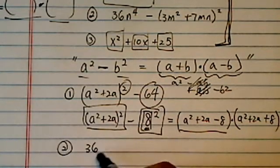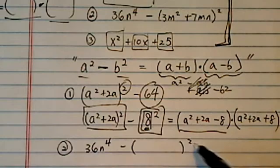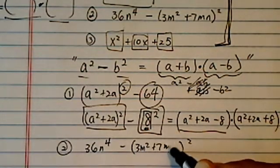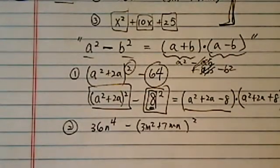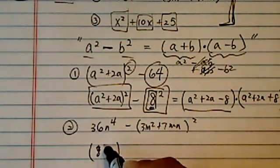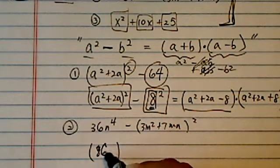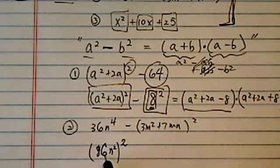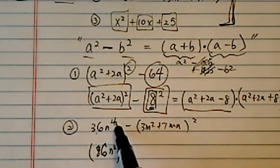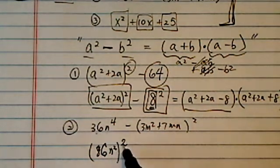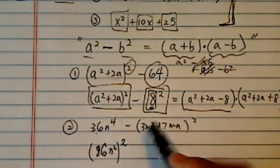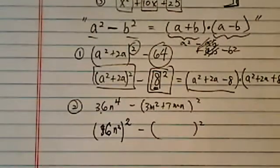Let's try number two. 36n to the fourth minus the big messy one to the square, 3m squared plus 7mn. If your teacher throws this one on the test, don't panic, get into the square. I'm going to square the whole thing. When I square the whole thing, I have 6 squared which is 36, n to the fourth, because n to the square is squared again, it's n to the fourth. So I have 6n squared, the whole thing squared, minus this big messy ugly thing.